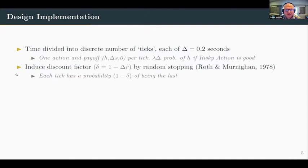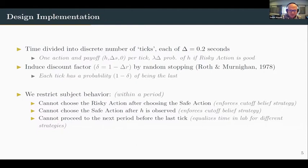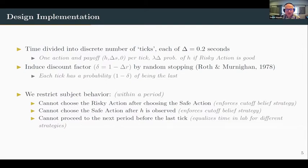We induce the discount factor by using a random stopping rule, so each tick has some probability of being the last tick. We also restrict subject behavior: we don't let subjects choose the risky action after choosing the safe action, to enforce the cutoff belief strategy. We also don't let subjects choose the safe action after observing a lump sum — this enforces the cutoff strategy and prevents obvious mistakes. Finally, we don't let subjects proceed to the next period before the last tick, because we want to equalize time spent in the lab across different strategies.